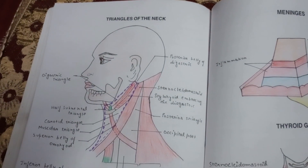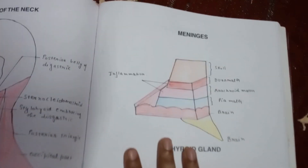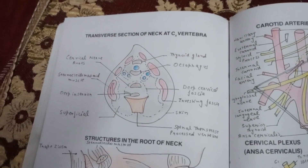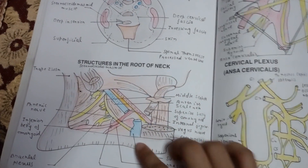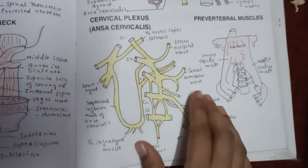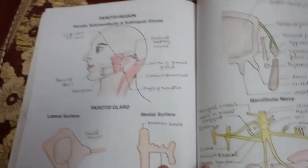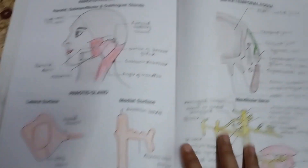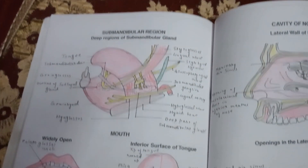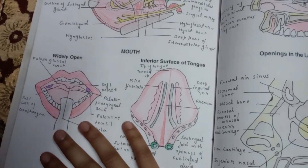This is the posterior triangle of neck, superficial structures of the back of neck, and the triangle of the neck. These are the meninges, and this is the thyroid gland. Structures in the root of neck. Carotid arteries and associated nerves. This is the cervical plexus. Parotid region. Your infratemporal fossa. Your mandibular nerve. Your mouth widely open and inferior structure of the tongue.